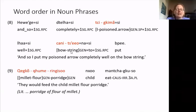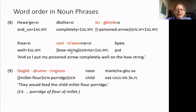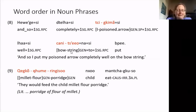Example nine gives us a nice case of a double genitive: 'kai kong, kume ringisou' — they would feed the child millet flour porridge. We have flour as the head and millet as the modifier, and together they are the modifier of porridge — so it is porridge of flour of millet, or millet-flour porridge. Again, this is a fixed order in the noun phrase.